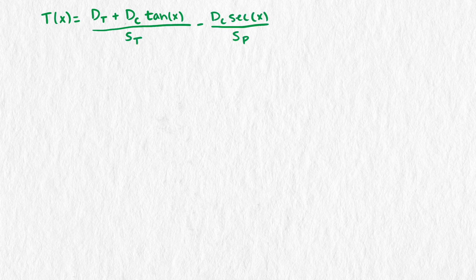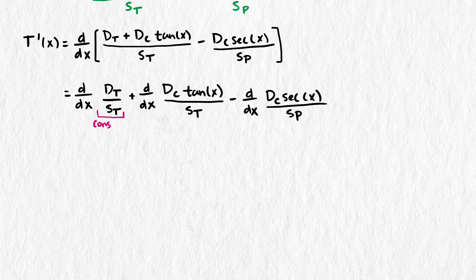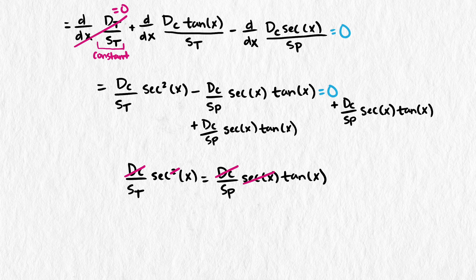Using the derivation techniques taught in calculus, we can find the derivative of our function. We'll call the derivative function t prime. To find the angle that gives the maximum safety time, we set the derivative equal to zero and solve for x. With specific numbers, we could graph this function and find where it crosses zero.